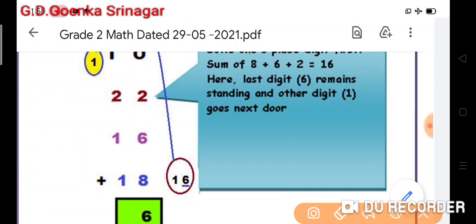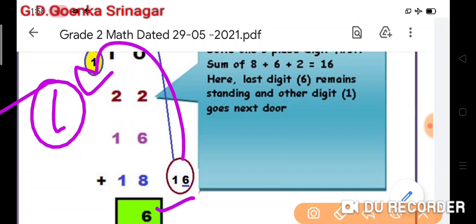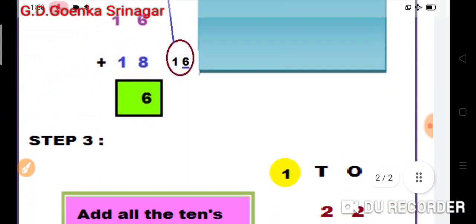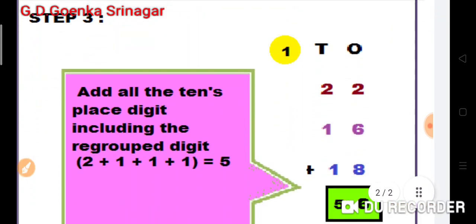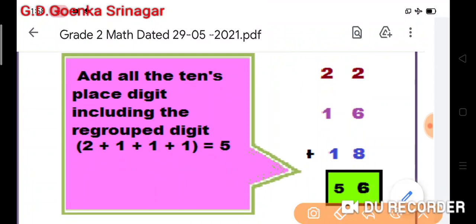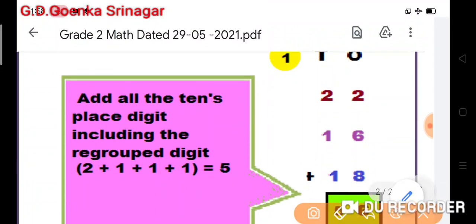Step three is where I have to add all the tens place digits including the regrouped one. I will add: 2 plus 1 is 3, 3 plus 1 is 4, and 4 plus 1 is 5. So I wrote 5 here. The sum or the total here is 56.